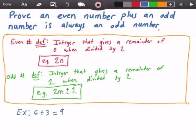Let's take another example. We'll do four plus seven. Four is an even number, seven is an odd number, and we get 11, which is an odd number. So everything seems to be true so far with these few examples.